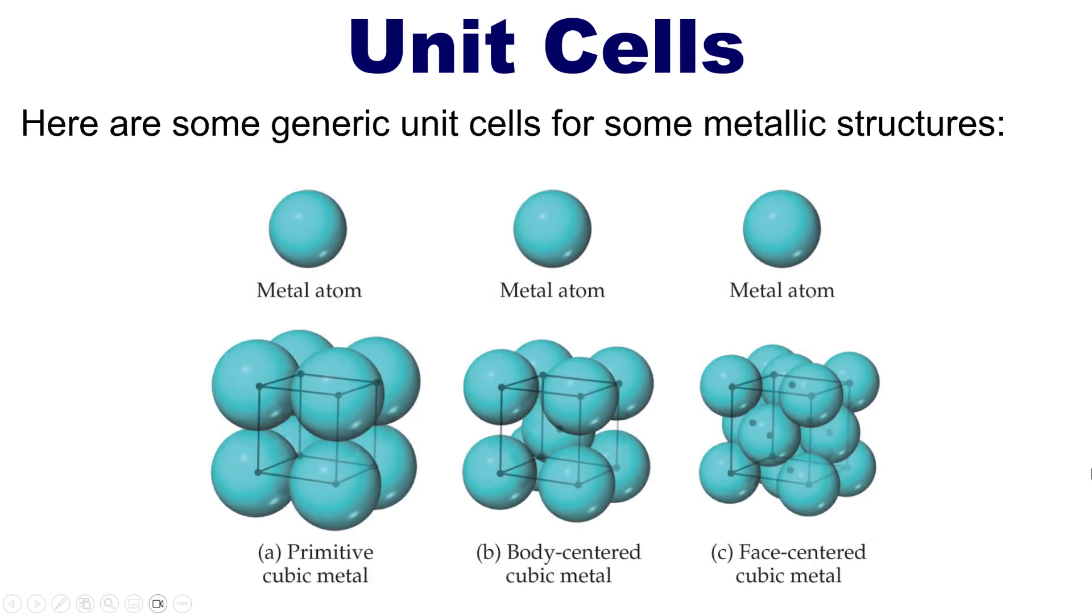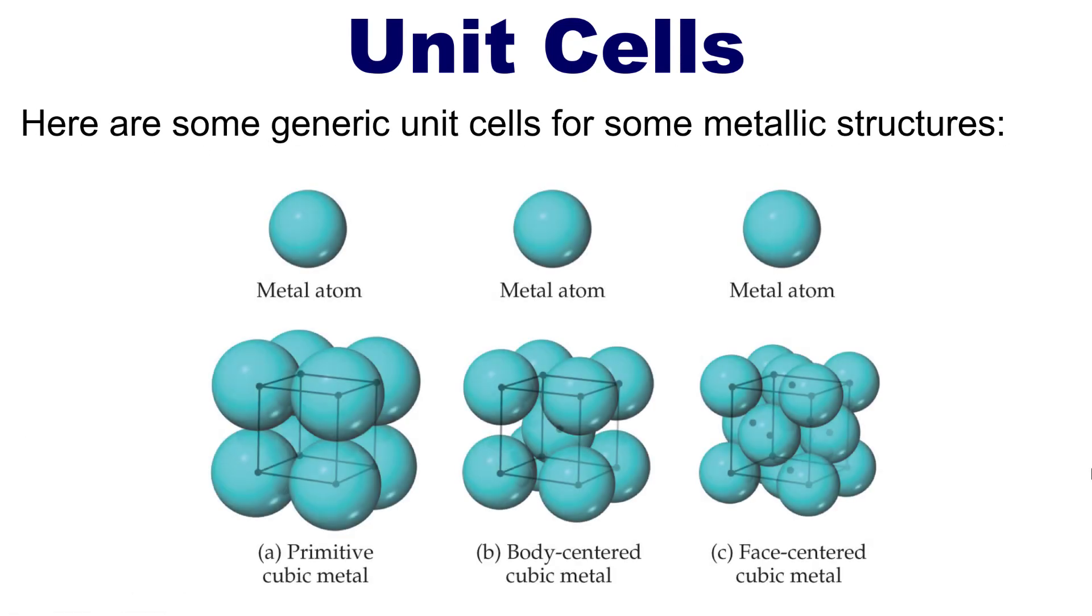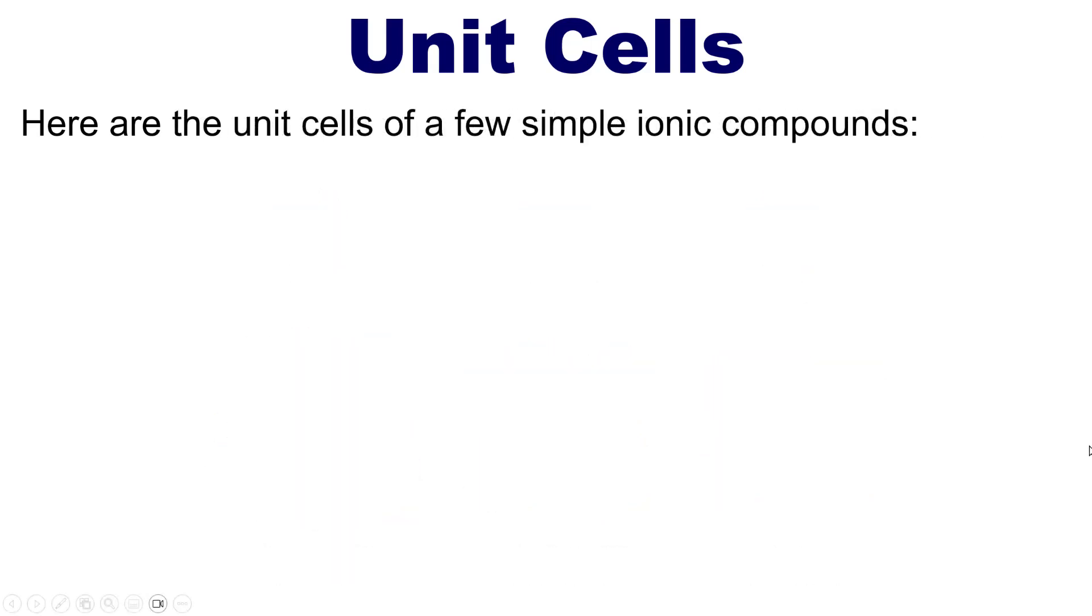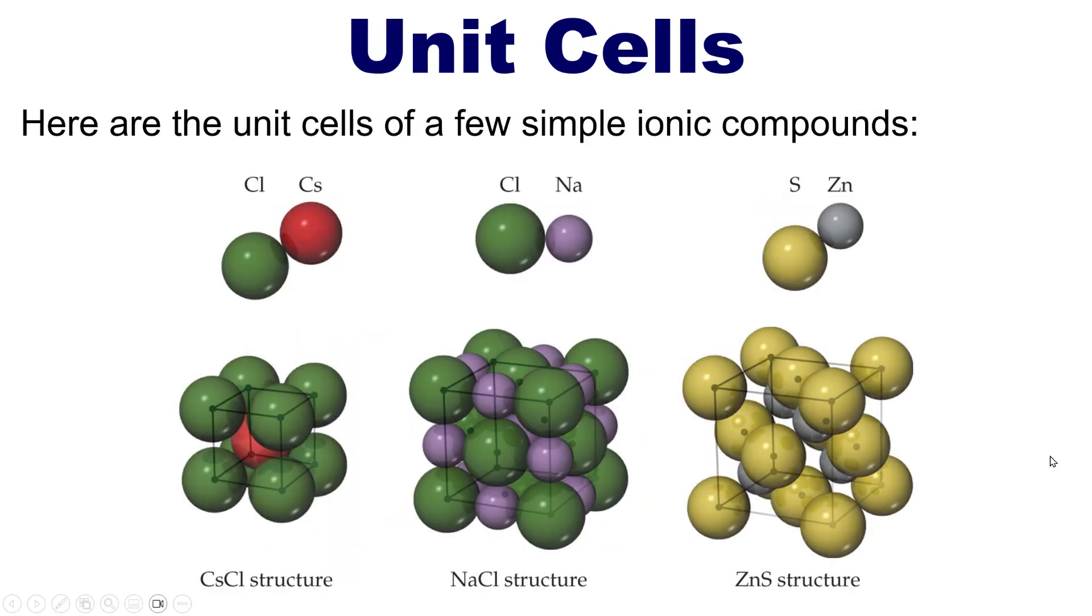Here then are some generic unit cells for some metallic structures which you're welcome to pause and look at for a moment. And here are some unit cells for some simple ionic compounds. Isn't that beautiful? I thought so.